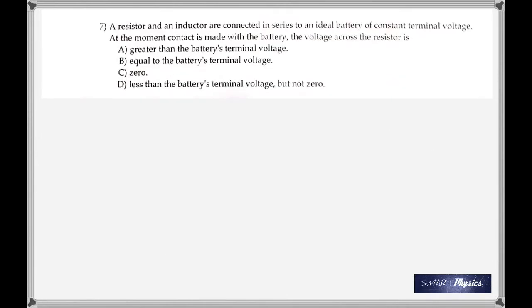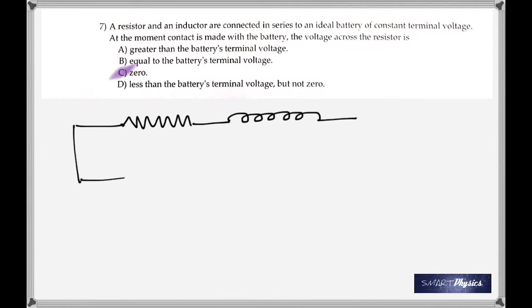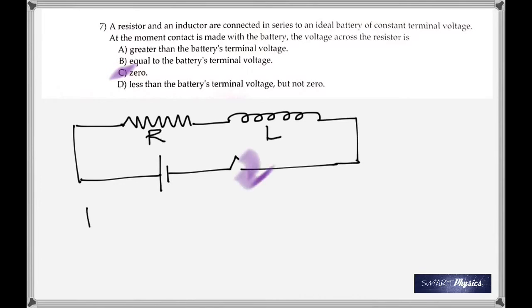A resistor and an inductor are connected in series to an ideal battery of constant terminal voltage. At the moment contact is made with the battery — meaning you are just closing the circuit — right when you close the circuit, the current flowing is zero. There is no current at that instant, so the voltage across the resistor is zero. I equals zero.